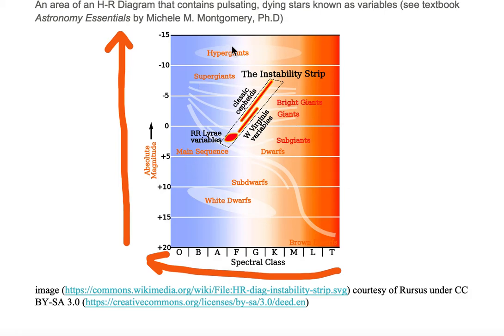On the diagram, we place various objects based on their spectral class and absolute magnitude, or we can compare their luminosity, which is their power output at the surface, to their surface temperature.